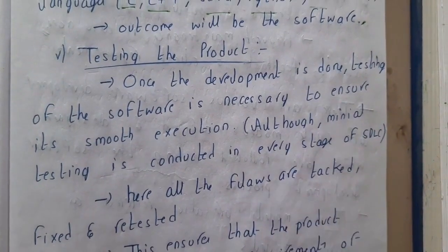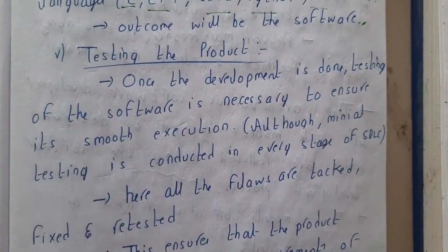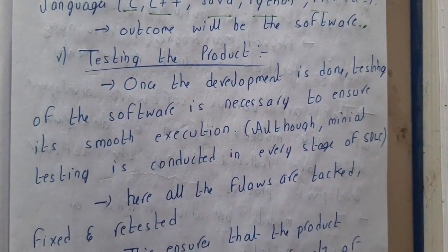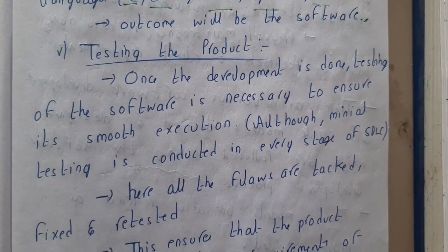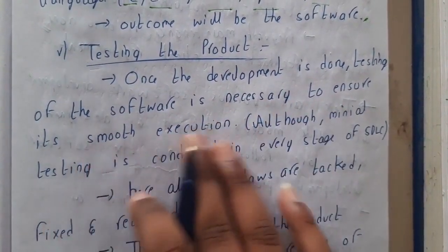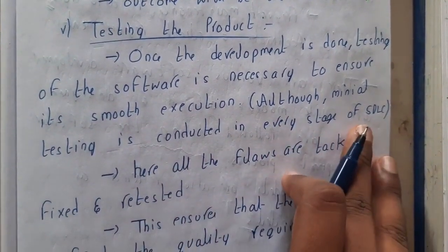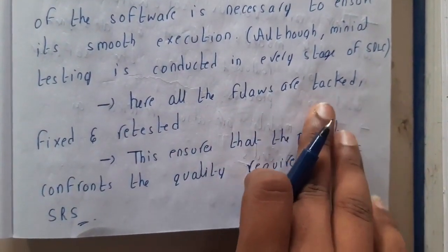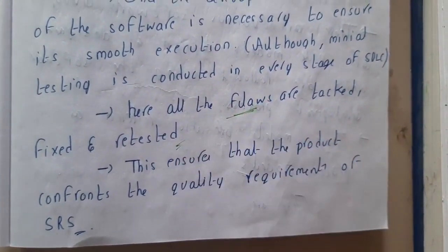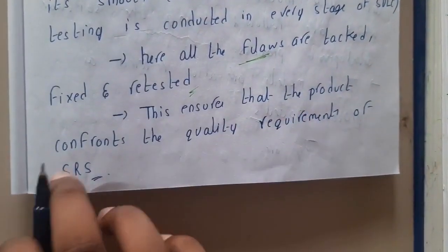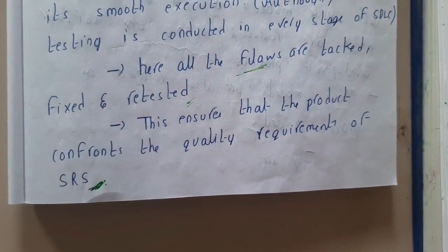Once the software is ready, testing begins. Developers test multiple things — whether the software meets requirements, whether it is working, whether every module is working perfectly — through unit testing, integration testing, and other types. Although minimal testing like unit and module testing is done at every stage of SDLC while building, if any flaws or bugs are found during this stage, they are debugged and resolved. This ensures the product conforms to the SRS requirements.